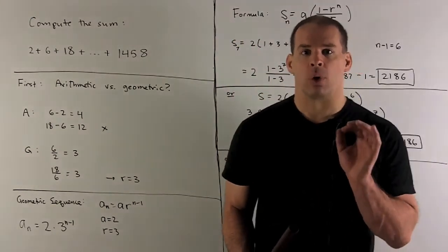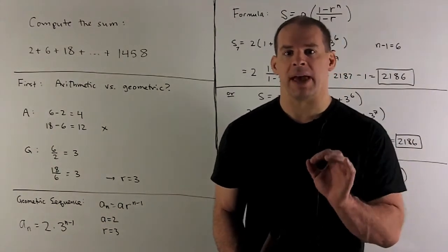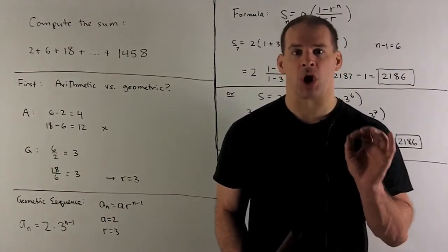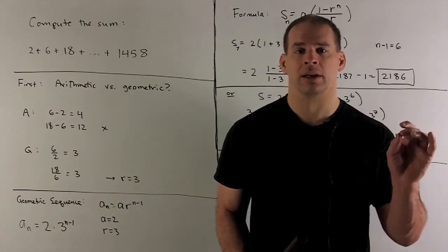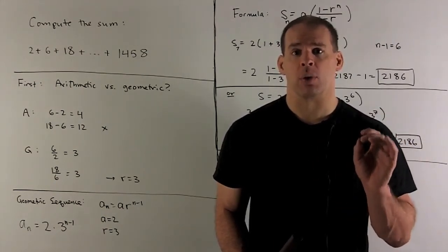Now, what's the formula for a geometric sequence? We'll have a sub n equals a times r to the n minus 1. a is our first term, r is our common quotient.